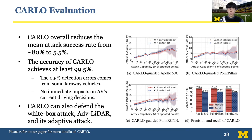We perform large-scale evaluations on CARLO with setups similar to our black-box attack. CARLO overall reduces the main attack success rate from 80% to around 5.5%. The accuracy of CARLO achieves at least 99.5%, and we validate that the remaining 0.5% errors would not change driving decisions. CARLO can also effectively defend ADV-LiDAR and its adaptive attacks.